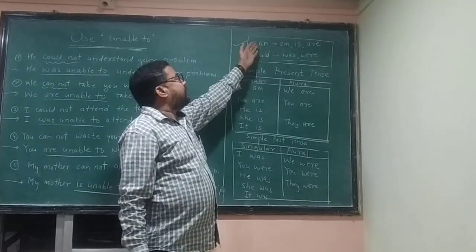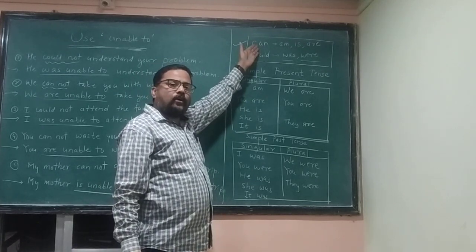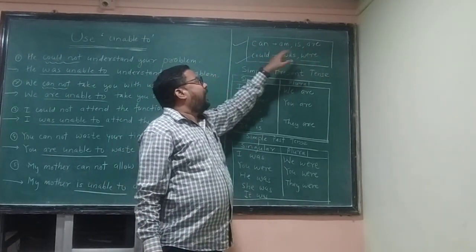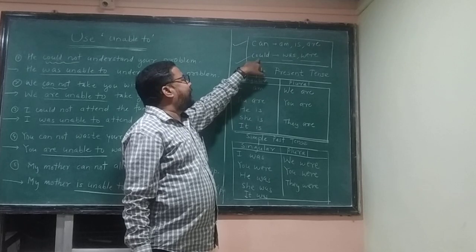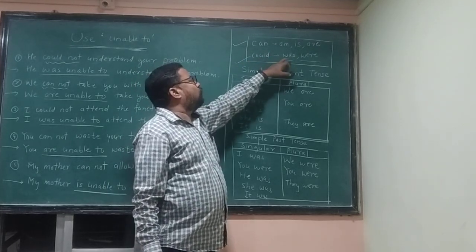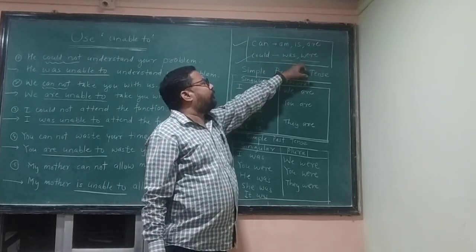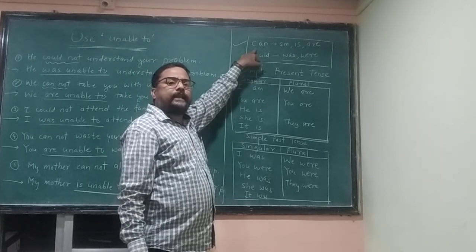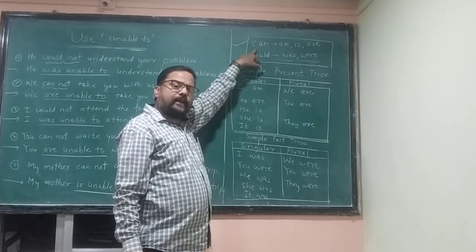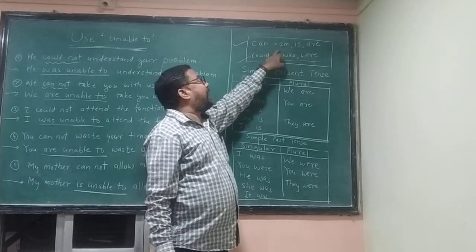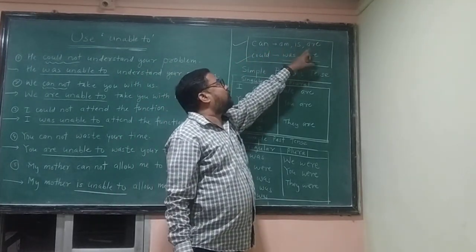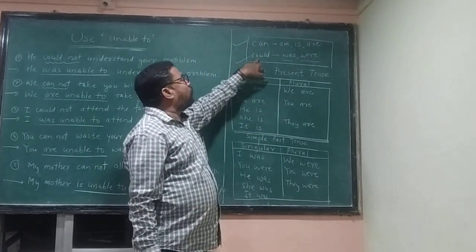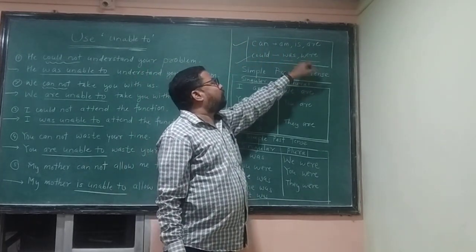If there is 'cannot' in the sentence, we have to use 'am,' 'is,' or 'are' before 'unable to.' And if there is 'could not,' we have to use 'was' or 'were' before 'unable to.'